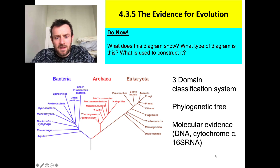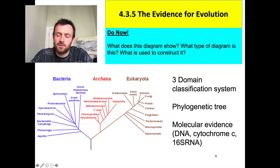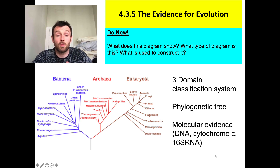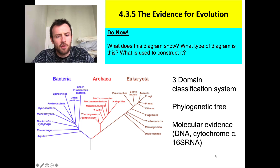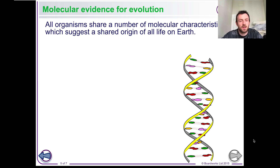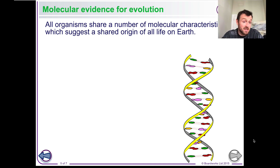We're talking about this again because phylogenetics and molecular evidence form part of the evidence for the theory of evolution — the wider theory of evolution — and we're going to be looking at other evidence for that theory today. So the first thing I want to recap on is that we've already looked at a lot of molecular evidence for evolution in the previous lesson about phylogenetics, but let's look at the main points again.